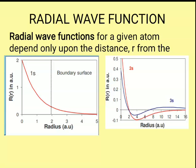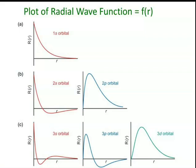Similarly, we can plot the graph for 3s, represented by the blue color. In this picture, I have plotted the radial wave function graphs for 1s, 2s, 2p, 3s, 3p, and 3d. We can easily find the difference: as we proceed from 1s to 2s, the number of nodes increases. There was no node in 1s, but there is one node in 2s. Similarly, in the 2p orbital there is no node, but in the 3p orbital there is one node, because the 3p graph shifts from positive to negative wave function.